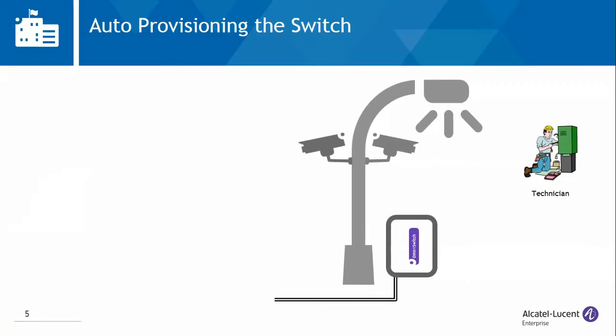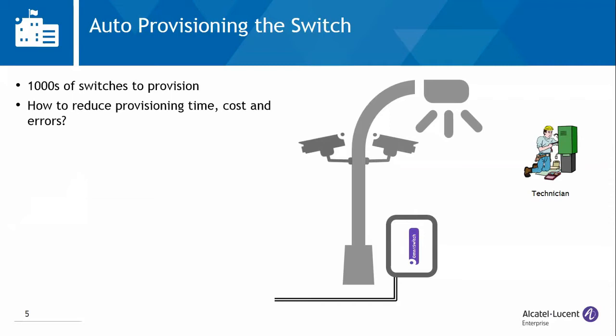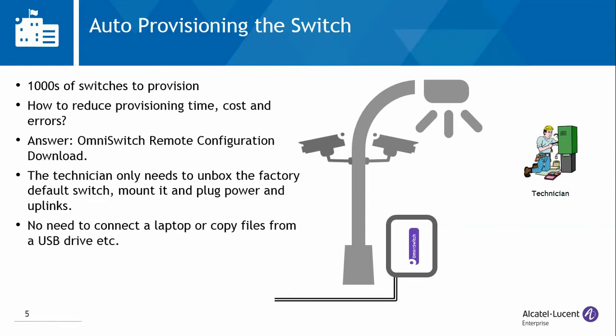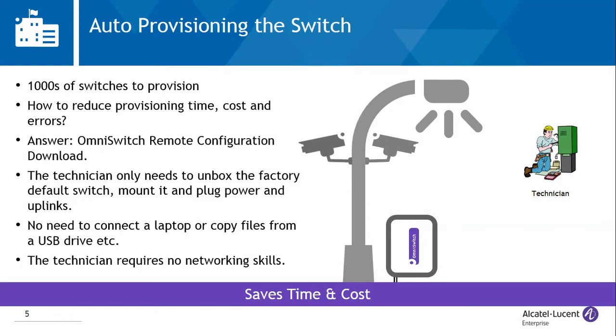Let's start with the first challenge, which is the provisioning of the network nodes. When there are thousands of switches to provision, how to reduce provisioning time, cost and errors. The answer is the OmniSwitch remote configuration download feature. The technician only needs to unbox the factory default switch, mount it and plug power and uplinks. There's no need to connect a laptop or copy files from a USB drive. The technician requires no networking skills. By automatically provisioning network edge nodes, the smart city saves time and cost.